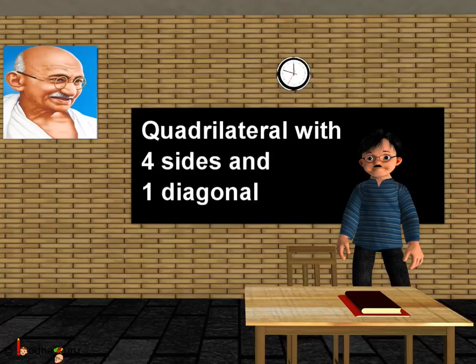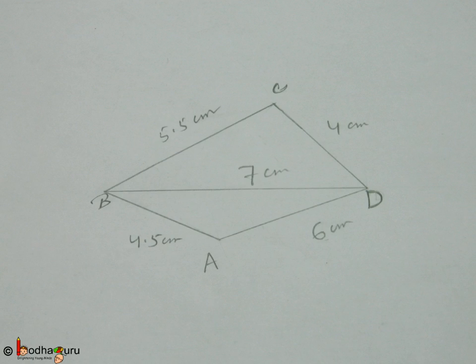Hello children, in this lesson we shall learn how to construct a quadrilateral when we are given the length of all the four sides and one diagonal. Let's get started. Say we are going to construct a quadrilateral ABCD in which diagonal AC is equal to 7 centimeter.